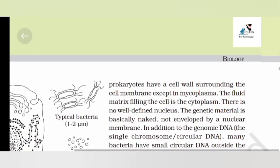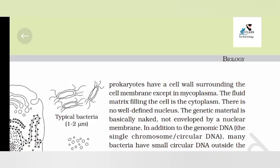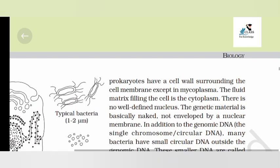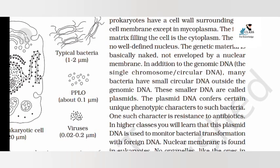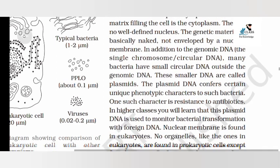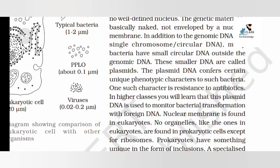All prokaryotes have a cell wall surrounding the cell membrane, except in mycoplasma. The fluid matrix filling the cell is the cytoplasm. There is no well-defined nucleus. The genetic material is basically naked, not enveloped by a nuclear membrane.